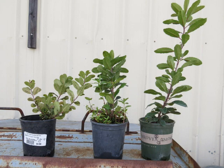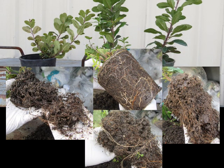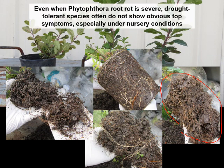Another issue in nursery conditions is that infected plants are often asymptomatic carriers. Looking at three plants here, you might wonder if any were infected with Phytophthora — and in fact, all three are quite heavily infected. The one on the right, the largest of the three, has an almost completely rotted root system. With drought-tolerant plants, especially California natives, they can look healthy on top even though their root systems are heavily decayed. That means you're not going to spot infected plants just by looking at them, and during that period they can continue to spread inoculum.